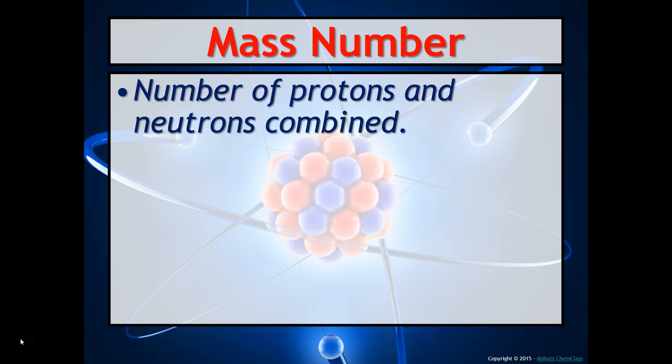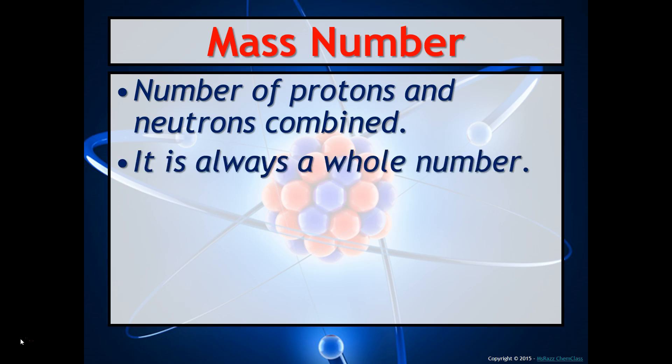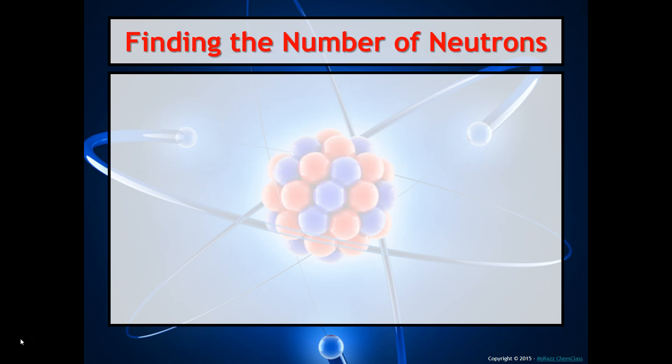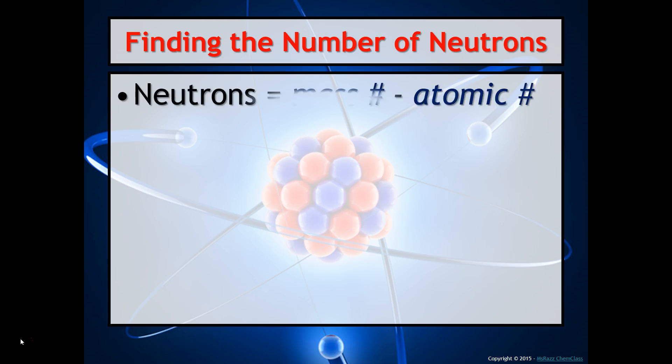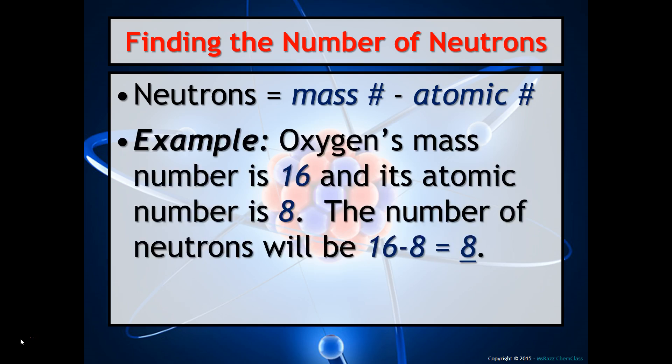Mass number is the number of protons and neutrons combined. It is always a whole number. To find the number of neutrons is pretty easy — you take the mass number minus the atomic number. For example, oxygen's mass number is 16 and its atomic number is 8, so the number of neutrons would be 16 minus 8, which is 8.